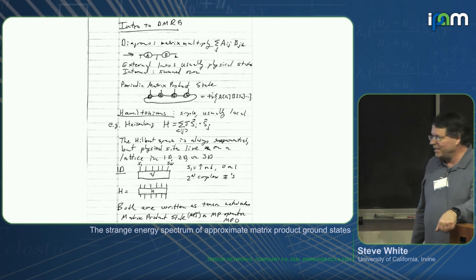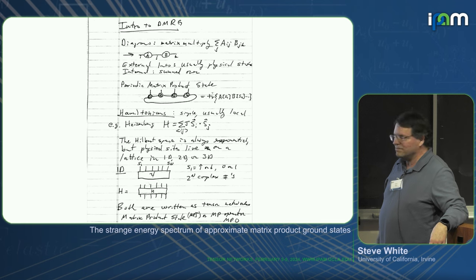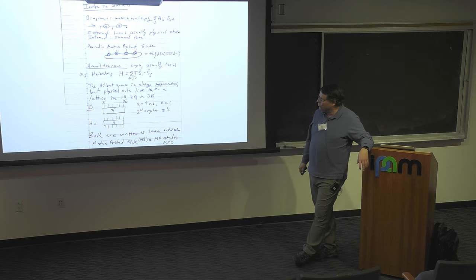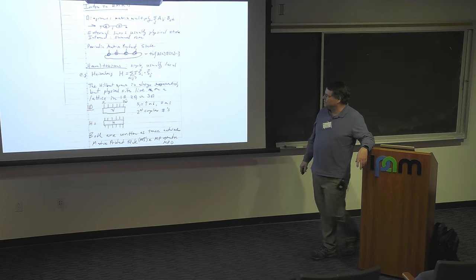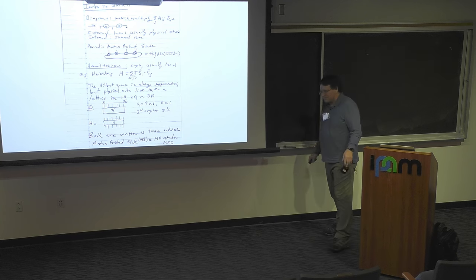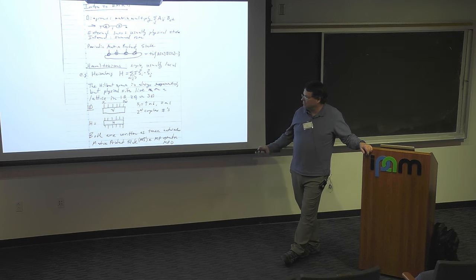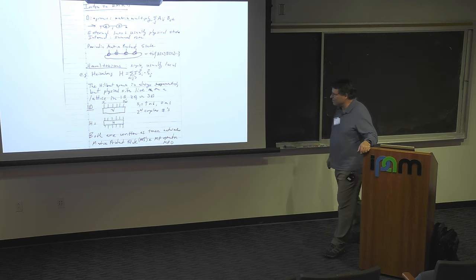We're interested in simulating Hamiltonians: ground states, low-lying states, finite temperature, that sort of thing. The Hamiltonians are simple — usually very local and simple form. The Hilbert space is always exponential, but the physical sites live on a lattice in 1D, 2D, or 3D, and that makes a big difference in terms of what happens.